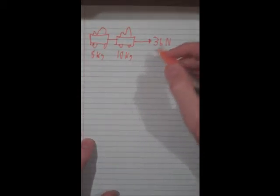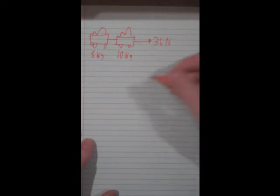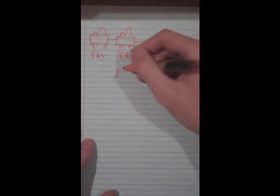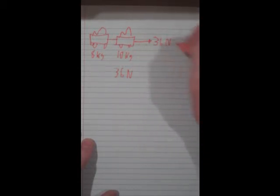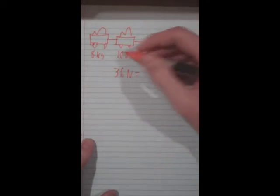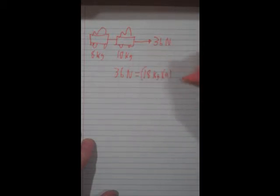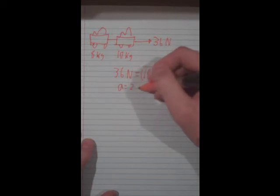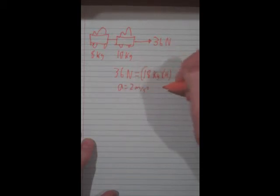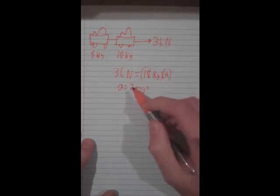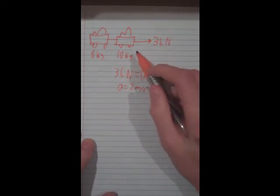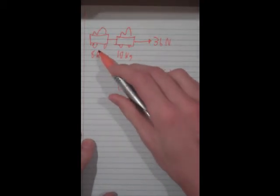So what we do for that is first of all we find the net acceleration. So that is going to be 36 newtons which is our total force pulling on these two masses, which when you add them up is 18 kilograms times acceleration. So when you divide that, our net acceleration will be 2 meters per second squared. And when we have this we know that both carts are accelerating at 2 meters per second squared.